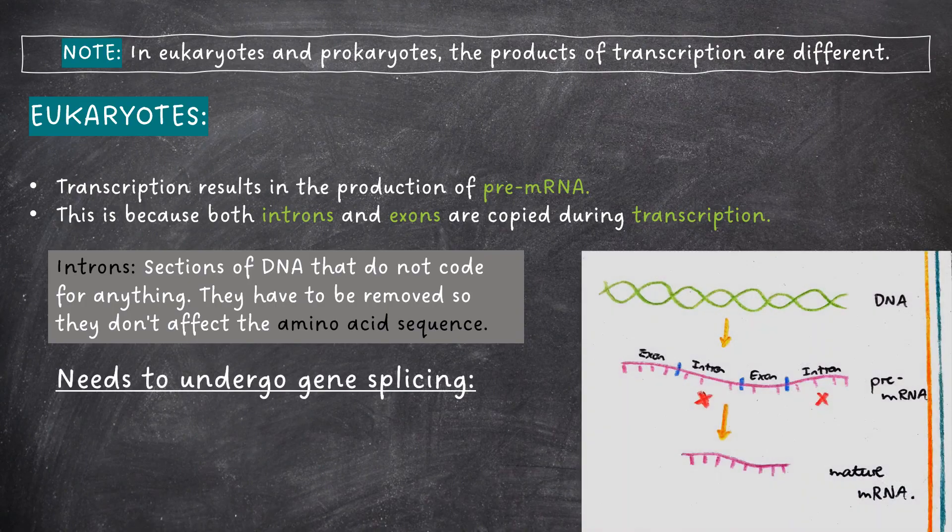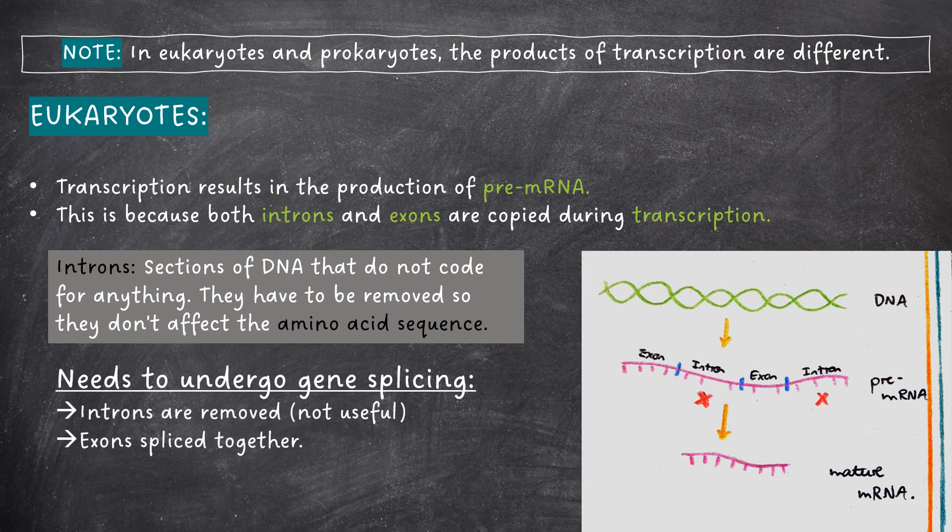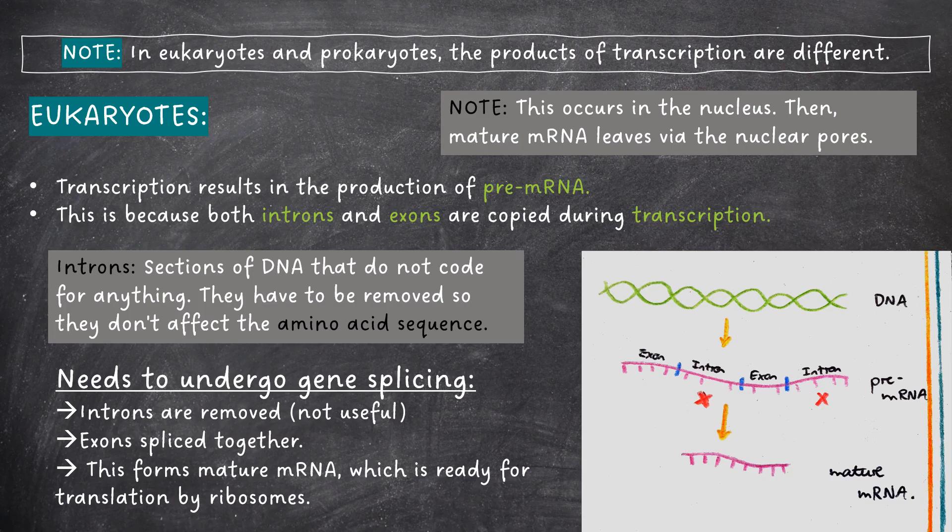Introns are removed in gene splicing and the exons are then spliced together, forming mature mRNA, which is ready for translation by the ribosomes. Note that this occurs in the nucleus. The mature mRNA then leaves the nucleus via the nuclear pores.